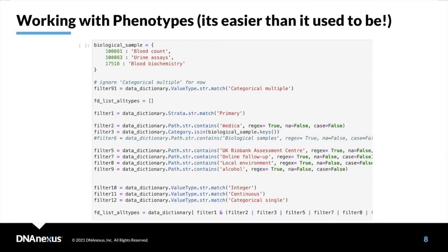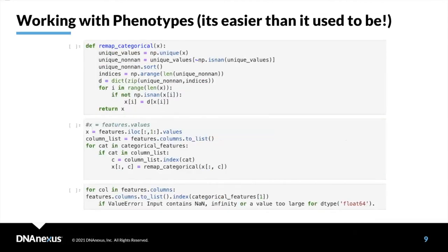You can do that via the cohort browser, also working with phenotypes, and then you can remove missing values relatively easily. That is a really nice thing and something you can work on in collaboration with scientists at DNAnexus.